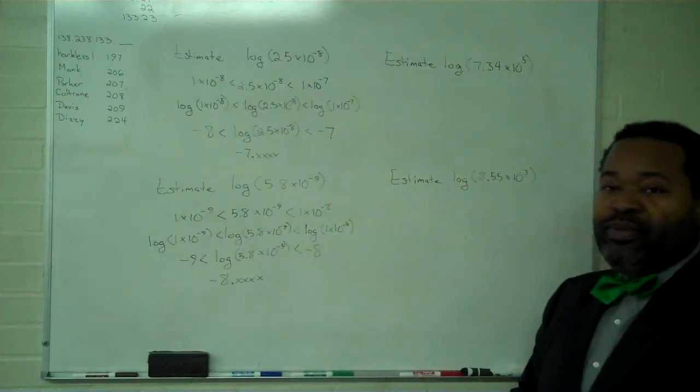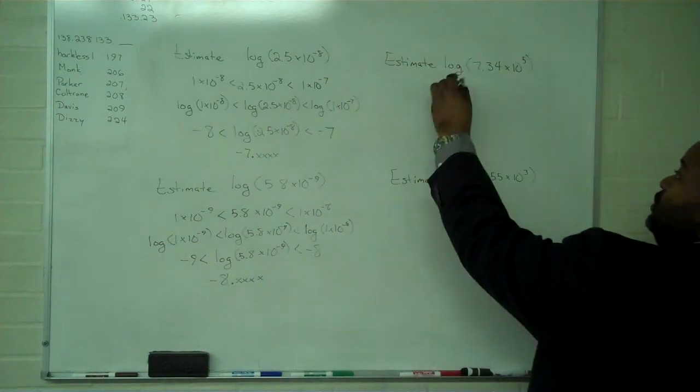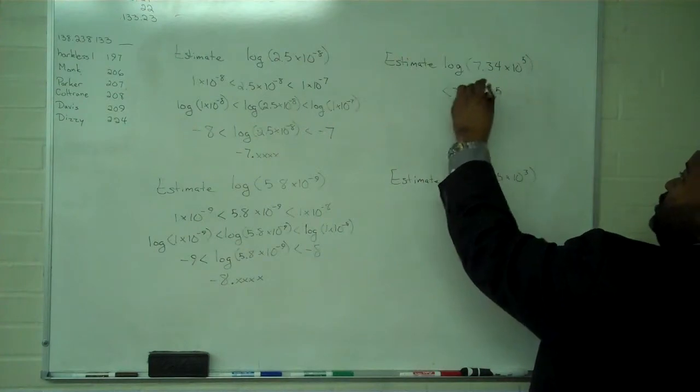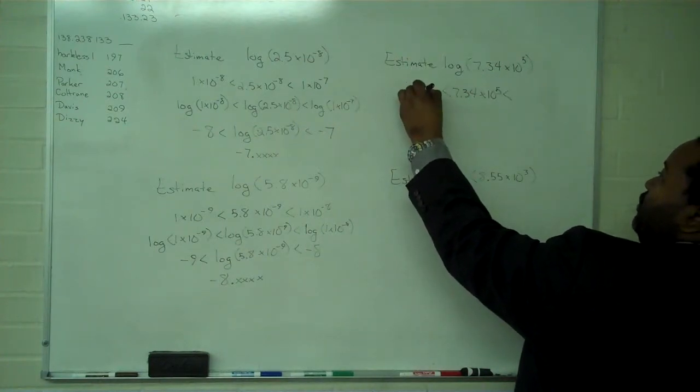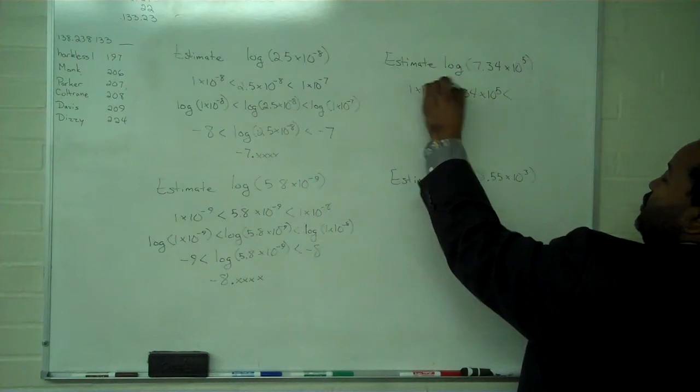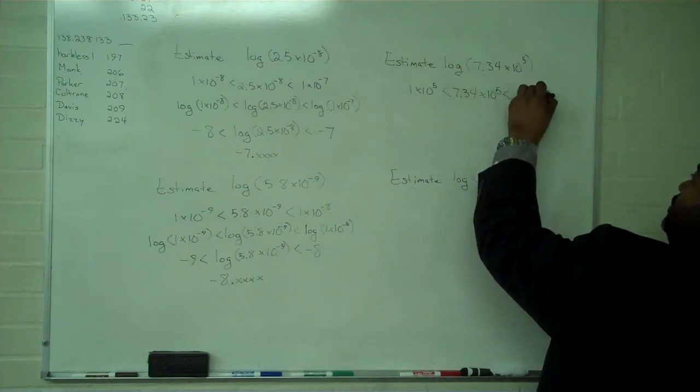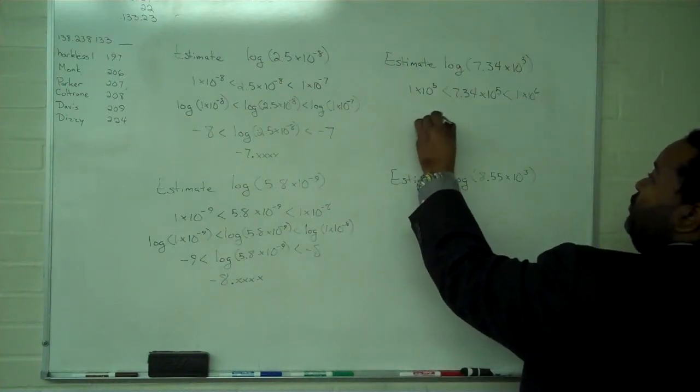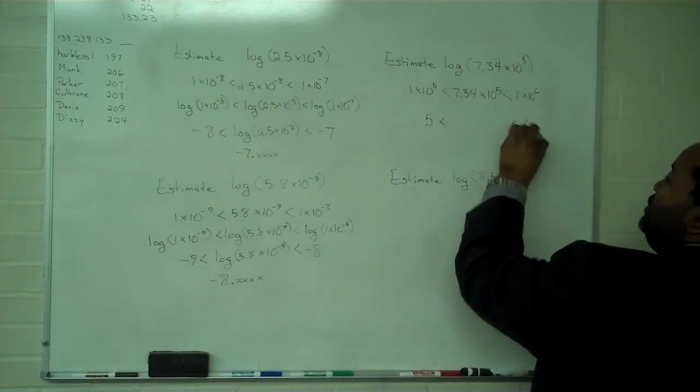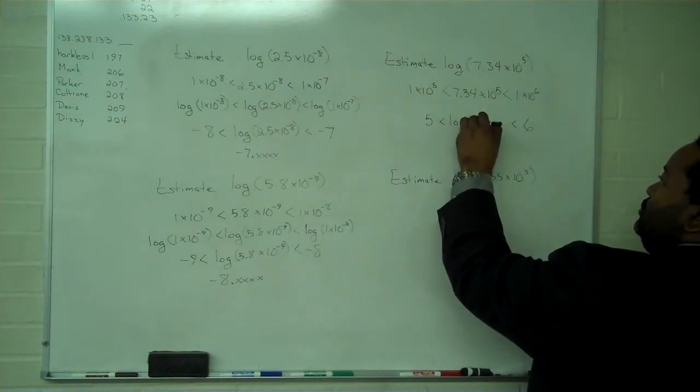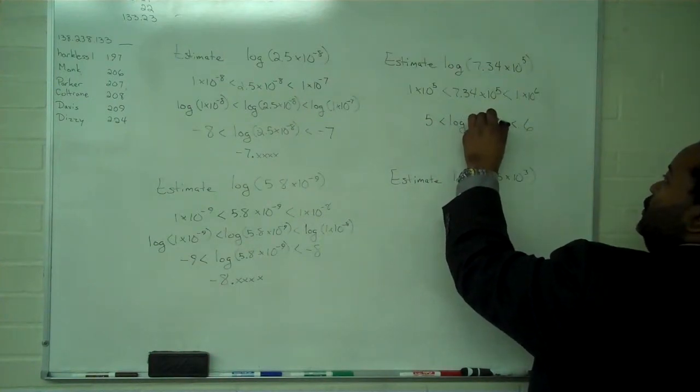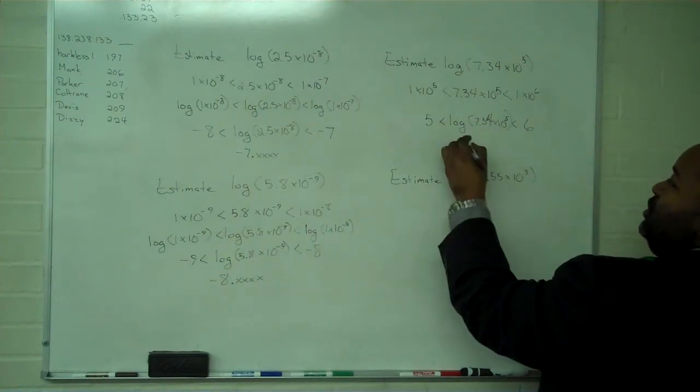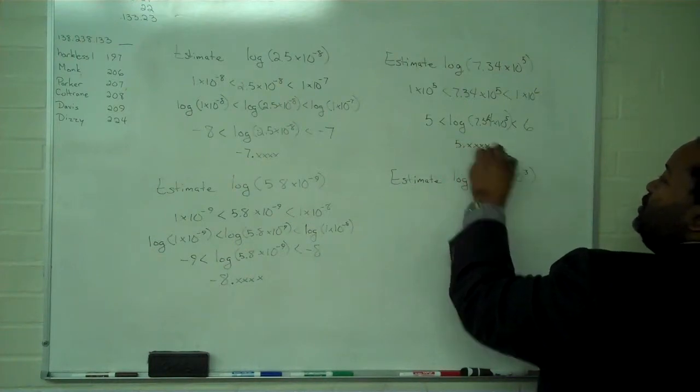Now for these two, we have positive powers, and the same rules apply. 7.34 times 10 to the fifth is bigger than 1 times 10 to the fifth and smaller than 1 times 10 to the sixth. If we take the logarithm of everything, we'll find 5 and 6 for our range. So this logarithm becomes 5 point something.